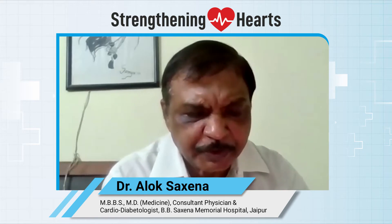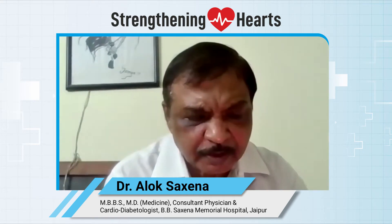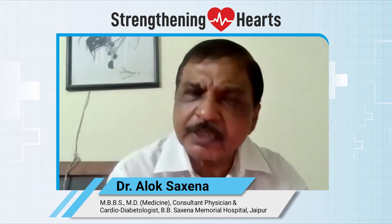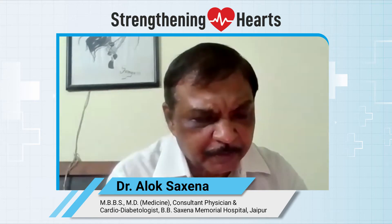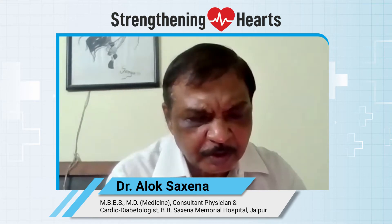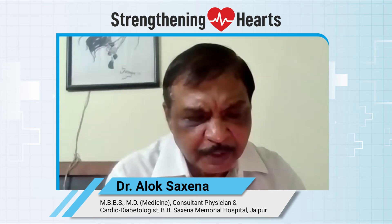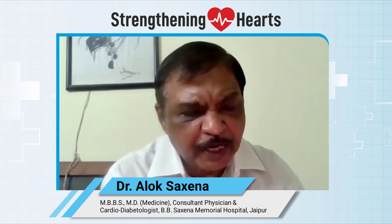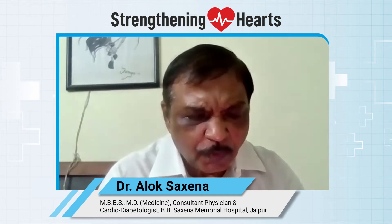Normal blood pressure is 120 by 80 mmHg. 120 is called systolic blood pressure, whereas 80 is called diastolic blood pressure. Blood pressure more than 140 upon 90 for a longer period of time is termed as hypertension.